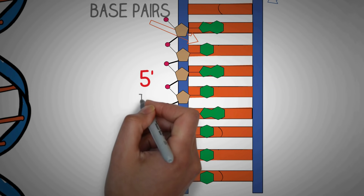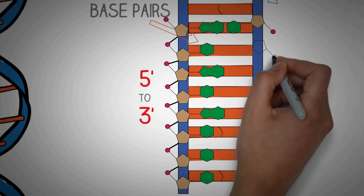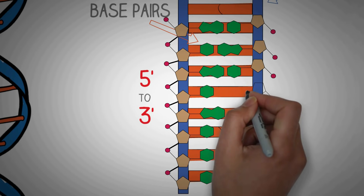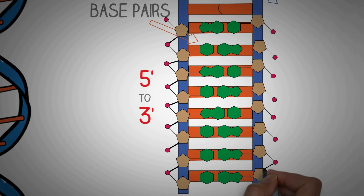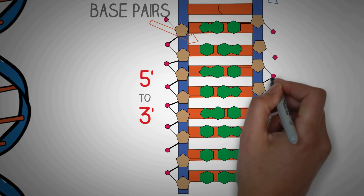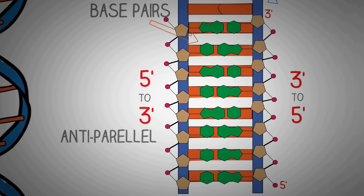If you look closely at the structure, it has a five-prime end to which a phosphate group is attached, and a three-prime end to which a hydroxyl group is attached. Coming back to our DNA ladder model, the first strand runs in the five-prime to three-prime direction. The opposite strand runs in completely the opposite direction — three-prime to five-prime — making the two strands of DNA antiparallel.